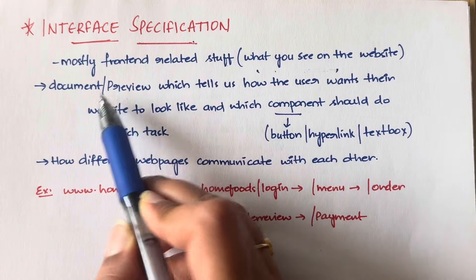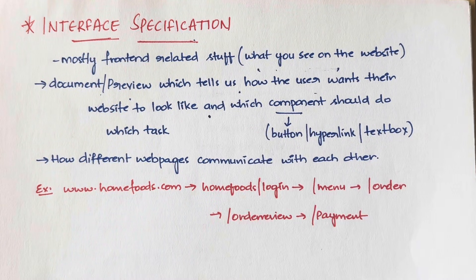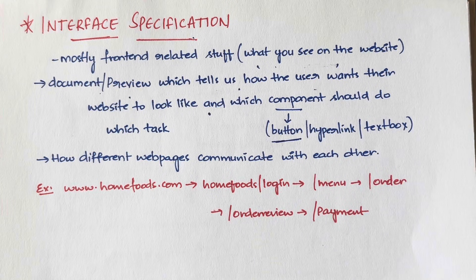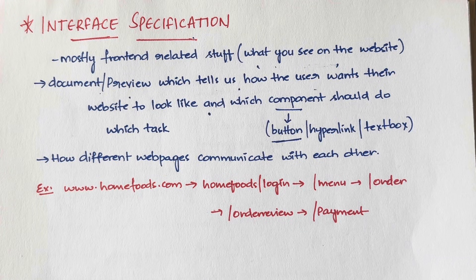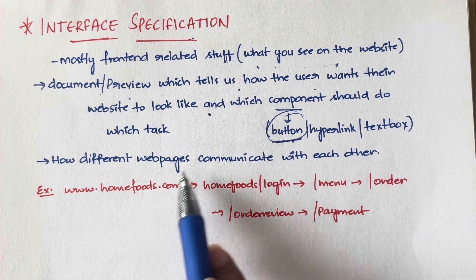Interface specification is a document or preview that tells us how the user wants their website to look and which component should do which task and be placed where. For example, a Save button, a Login button, or a Logout button — where exactly do you want to place it: center, right side, left side, below the password field or username field? What color do you want to give it? How you want your front end to look and what each component does is specified in the interface specification.